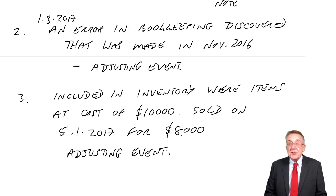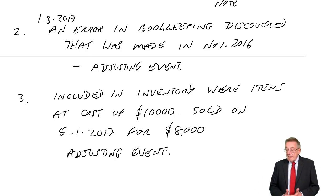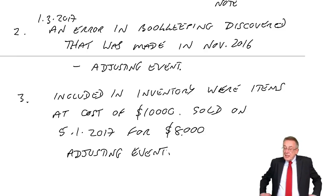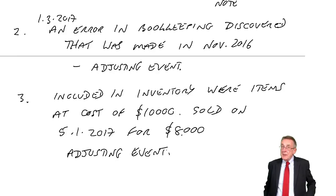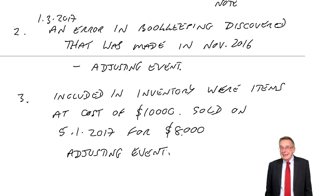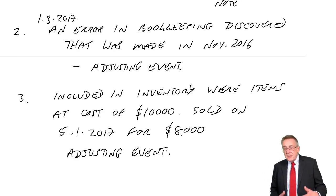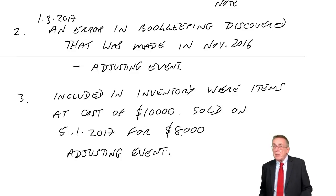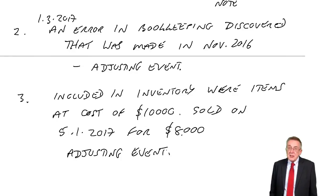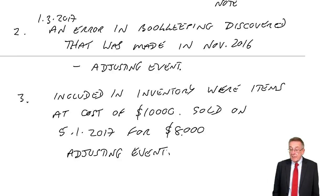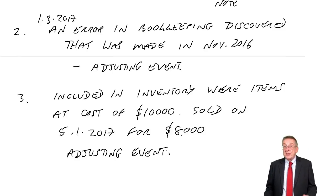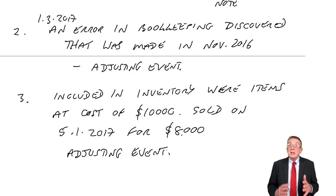Now, it is possible that as of December they really were going to be sold for more than £10,000, and maybe on the 4th of January something happened to damage them and then they were worth less. If that was the case — if the reason they were being sold cheaper was because of something that happened after December — then we wouldn't adjust. But in the exam you'd assume they weren't damaged later, that they never were going to be sold for more than £10,000 and there always was going to be £8,000. So you would adjust and reduce the value.